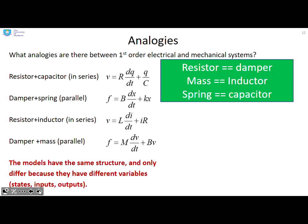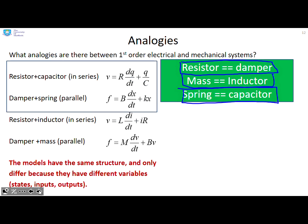Analogies then. What analogies are there between first order electrical and mechanical systems? We've already agreed that there's a basic analogy between a resistor and a damper, a mass and an inductor, and a spring and a capacitor. So if we look at the models that we've derived, you can see a resistor capacitor is going to be analogous to a damper spring because the resistor is analogous to the damper and the capacitor is analogous to the spring. But you notice in series here, in parallel here. And if you look at these two equations, you can see the analogous structures and the analogous position of the key parameters.